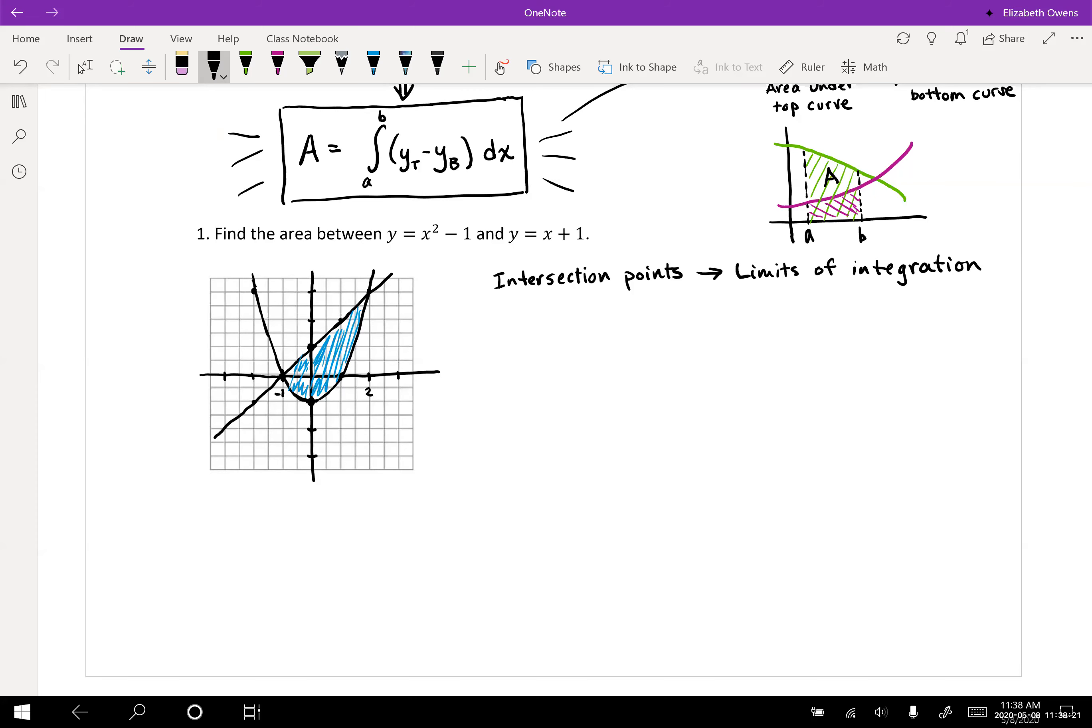To find intersection points, remember that's where you set the two functions equal to one another. So this is where x squared minus one equals x plus one. Let's move everything to one side: x squared minus x minus two equals zero, and then that can be factored as x minus two times x plus one. When we solve by setting each one of those factors equal to zero, we get x equals two and x equals negative one that are going to make up our limits of integration.